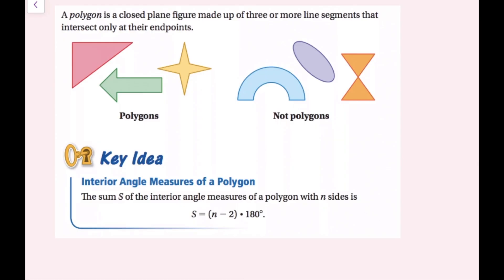A polygon is a closed plane figure made up of three or more line segments that intersect only at their endpoints. We have some examples of polygons right here, and then non-polygons — this one has some curved sections which we're not allowed to have, and then we have an intersection not at an endpoint. So these are not polygons; these are polygons.